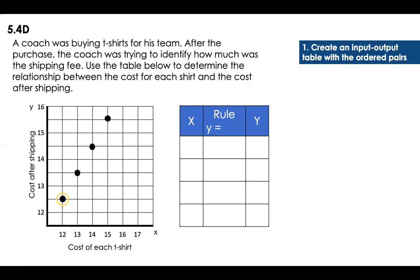So what are the ordered pairs? Let's match that first dot. We represent x on the x-axis: each shirt costs $12, and the cost after shipping — that is y — was $12.50. We're going to repeat the same for all of them. That means 13 and 13.50, the next one is 14 and 14.50, and the last one is 15 and 15.50.